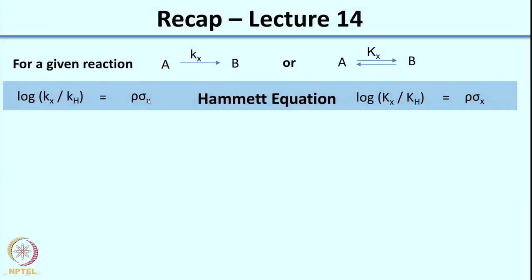Welcome back. In the last class we were looking at how you can get information about intermediates by varying the substituent on the aromatic ring. Hammett came up with what is called the Hammett equation, where you can correlate the log of Kx over Kh for a particular reaction, where x is the substituent varied on the aromatic ring, with sigma, the substituent constant. The value of sigma is obtained by studying the dissociation of benzoic acid, and the proportionality constant is called rho, the reaction constant.